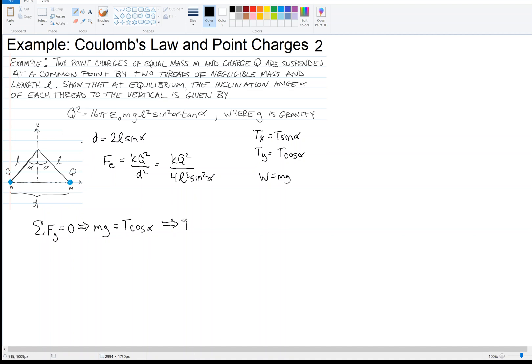What I find then is that tension is MG over cosine of alpha. That means the tension in the X direction is T sine alpha. If I plug in MG over cosine alpha there, then I have sine alpha over cosine alpha, and that's tangent. So now I have mass gravity times tangent of alpha, and that's what I was going for. I've got a tangent in the problem now.